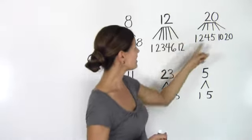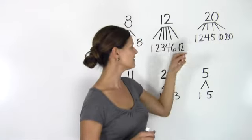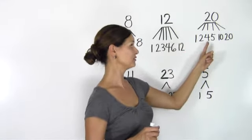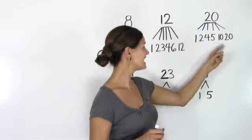Let's look at 20. 20 also has a lot of factors, 6 of them. The numbers 1, 2, 4, 5, 10, and 20.